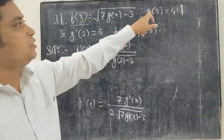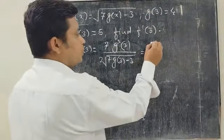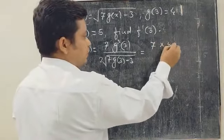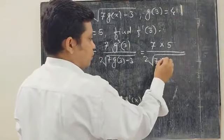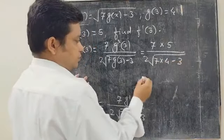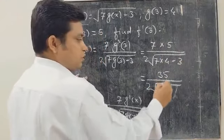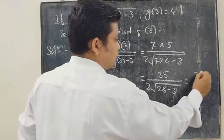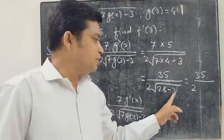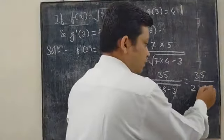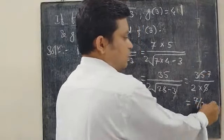Substituting the given values: g(3) is equal to 4 and g dash of 3 is equal to 5. So we get 7 times 5, which is 35, divided by 2 under root of 7 times 4 minus 3, which is 28 minus 3 equals 25. Under root of 25 is 5, so the answer is 35 divided by 2 times 5, which equals 7 by 2.